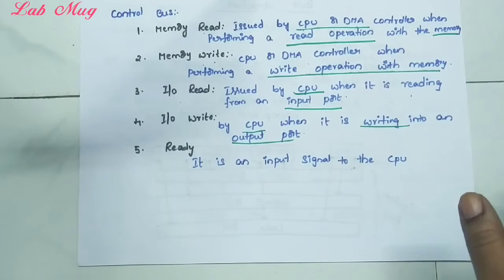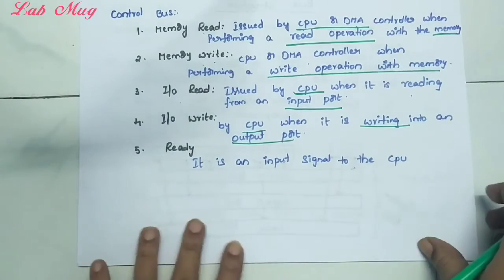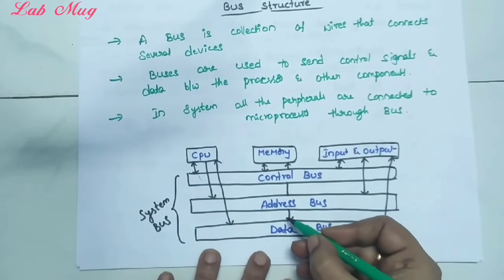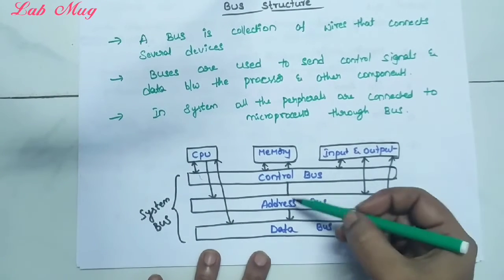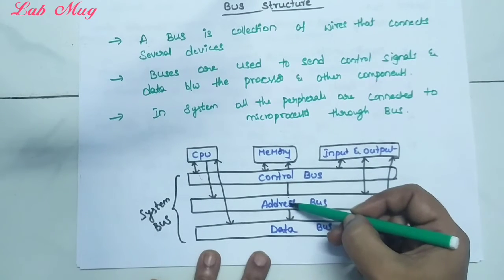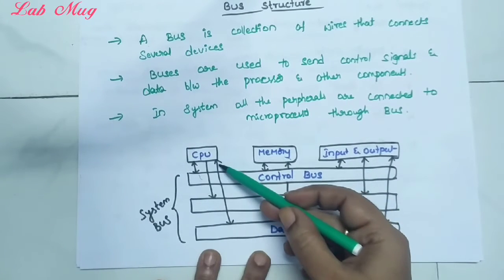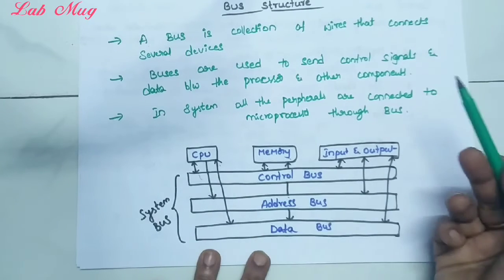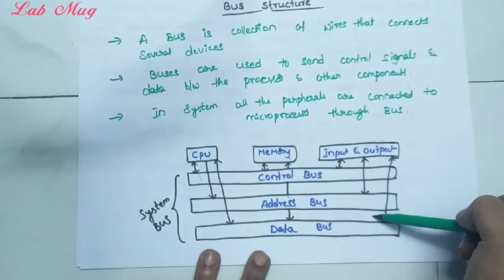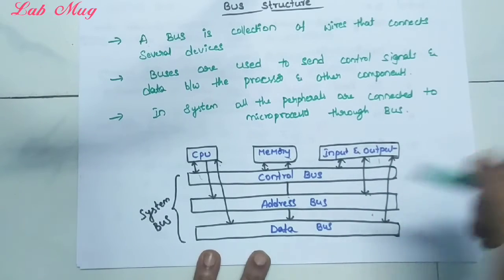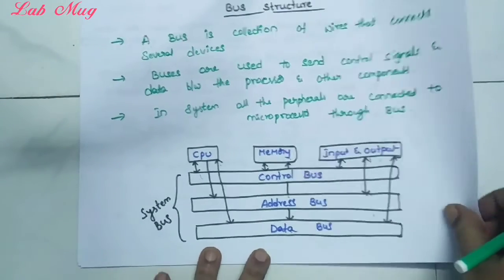Next, the second one is address bus. In the diagram, the address bus is connected from the central processing unit. Through the control bus, memory is connected; through the address bus, the data bus gets its connection. From the CPU, the address bus signals go only in one direction - outgoing. For input/output, the address bus goes both up and down.